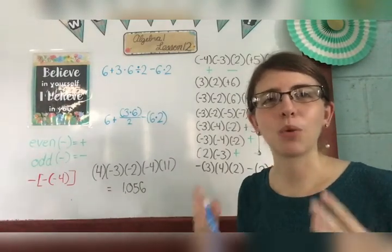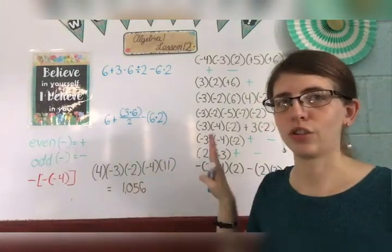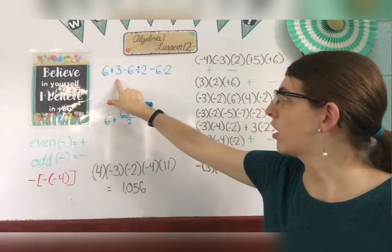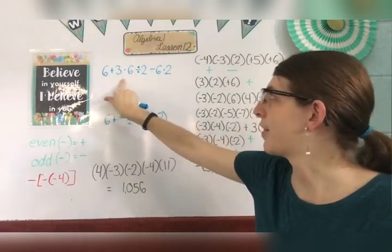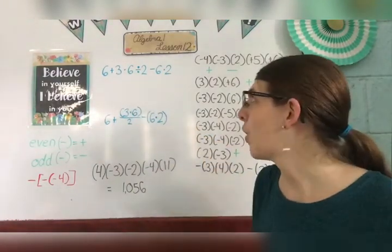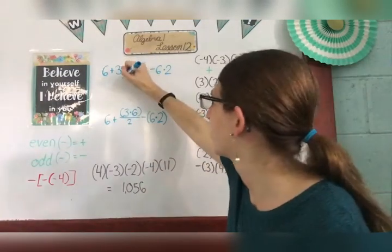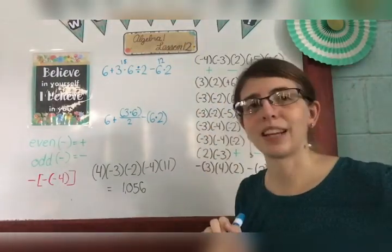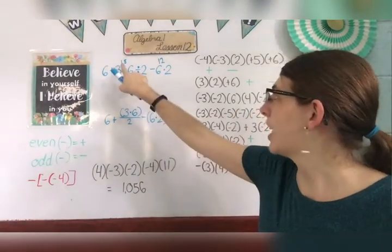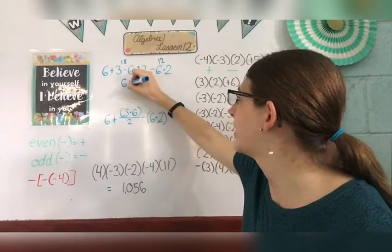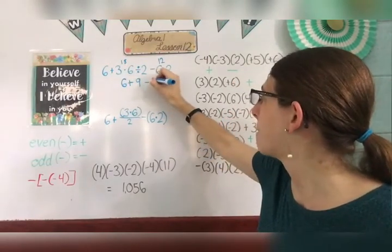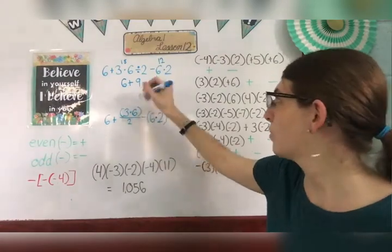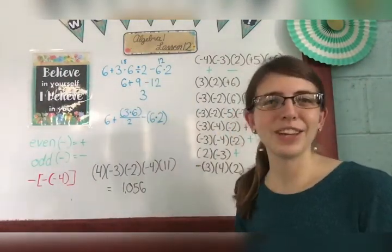To keep everything nice and organized and to keep you from getting lost, we just move from left to right. So: 6 plus 3 times 6 divided by 2 minus 6 times 2. I start here with the 3 times 6, not the 6 plus 3, because this is my first multiplication. 3 times 6 is 18. 18 divided by 2 minus 6 times 2. I can go ahead and multiply 6 times 2 — that's 12. Then 18 divided by 2 is 9. So I'm left with 6 plus 9 minus 12. Working left to right: 6 plus 9 is 15, minus 12 is 3. And there you go — the answer is 3.